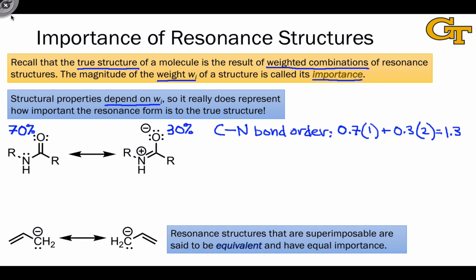In some cases, we draw resonance forms that put charge on distinct atoms but nonetheless are superimposable, and an example of the alloanion shown here highlights this effect nicely. The two resonance forms, strictly speaking, have negative charge on two different carbons, but the two structures are superimposable. We call superimposable resonance forms equivalent, and they have equal importance. In the case of alloanion, the true structure is 50% the left-hand resonance form and 50% the right-hand resonance form.